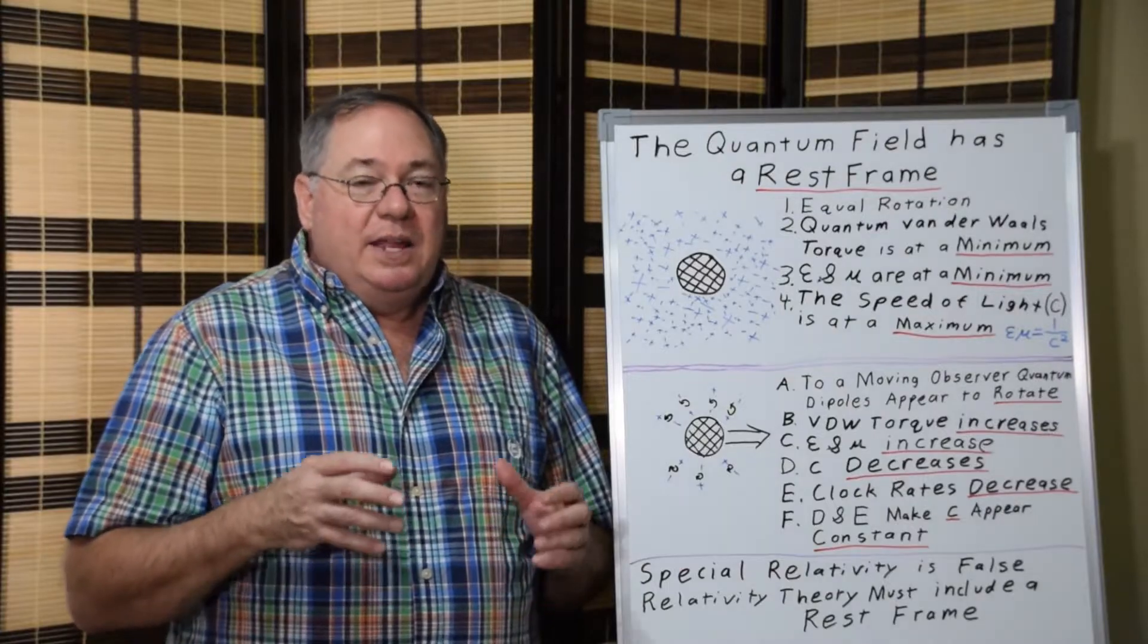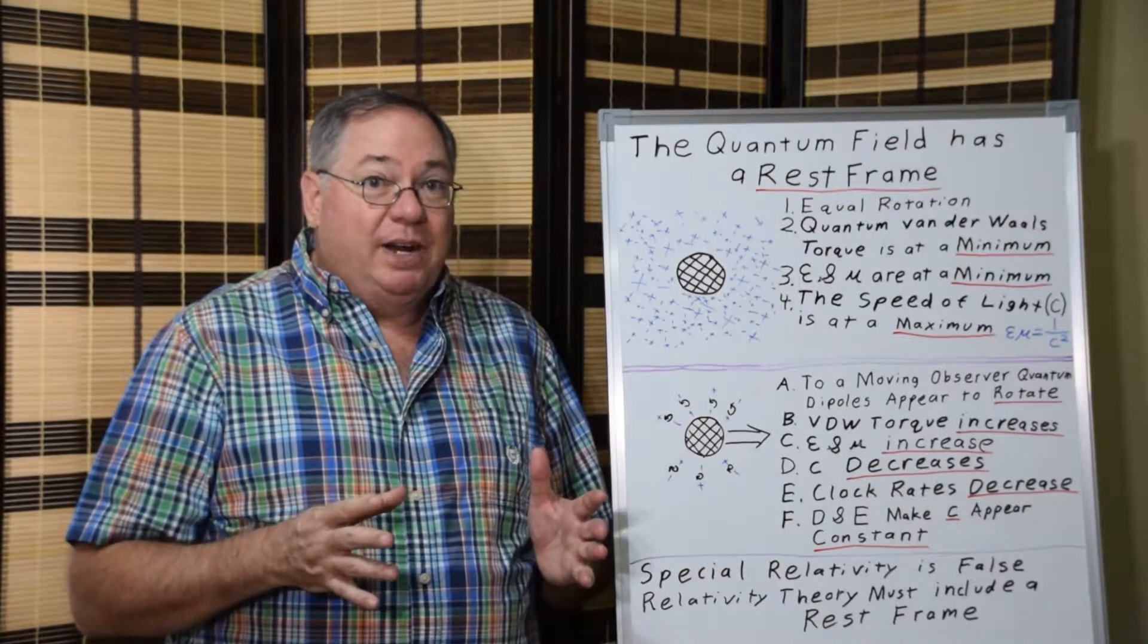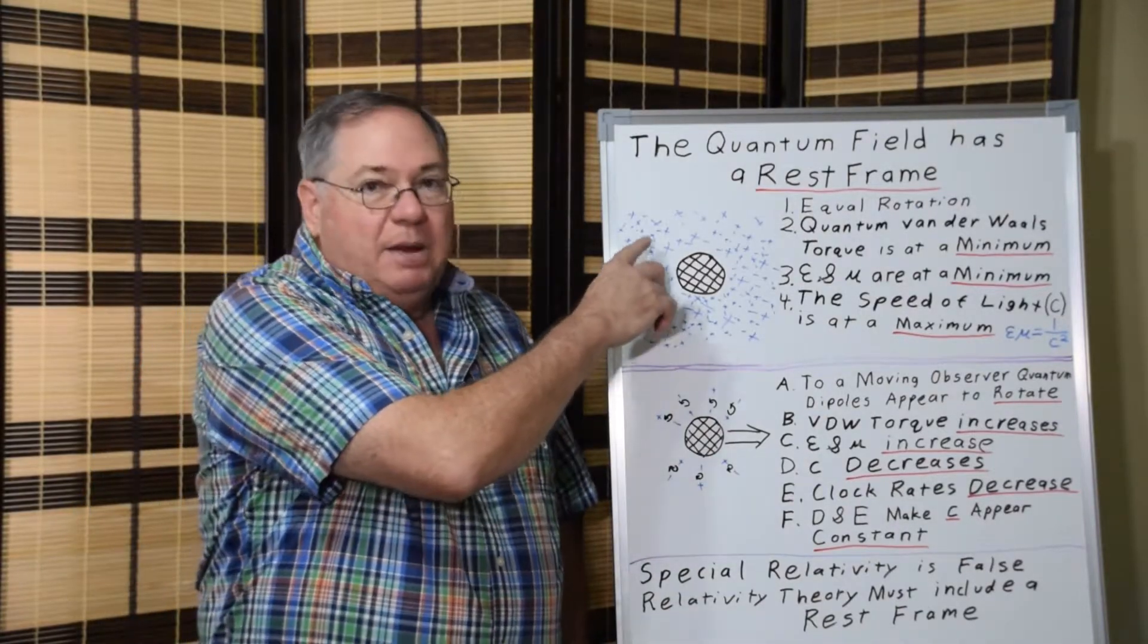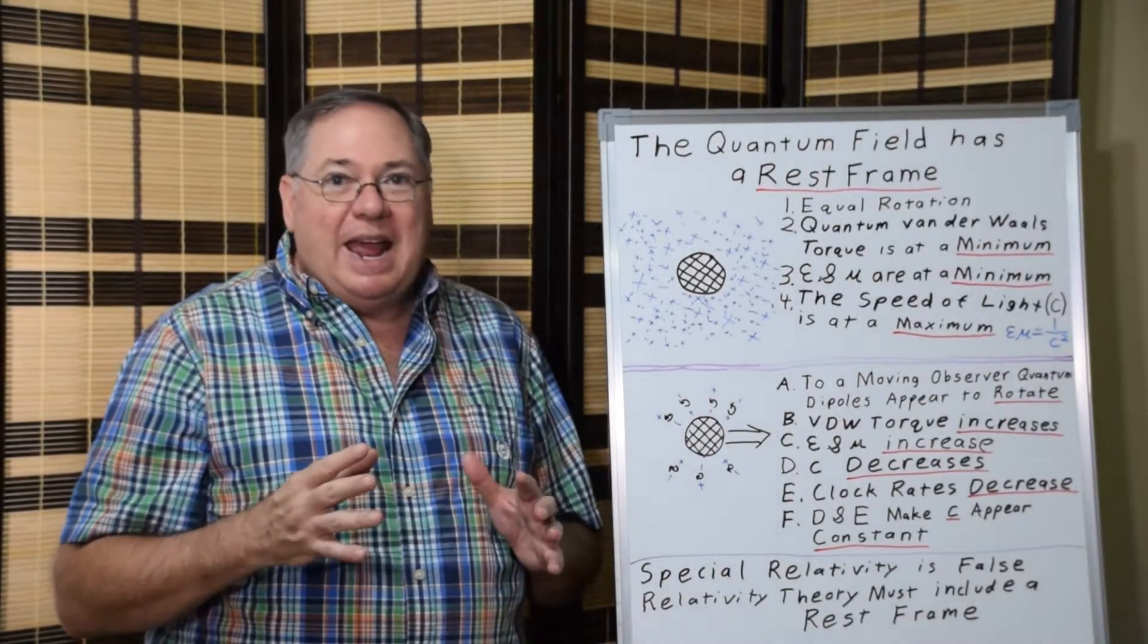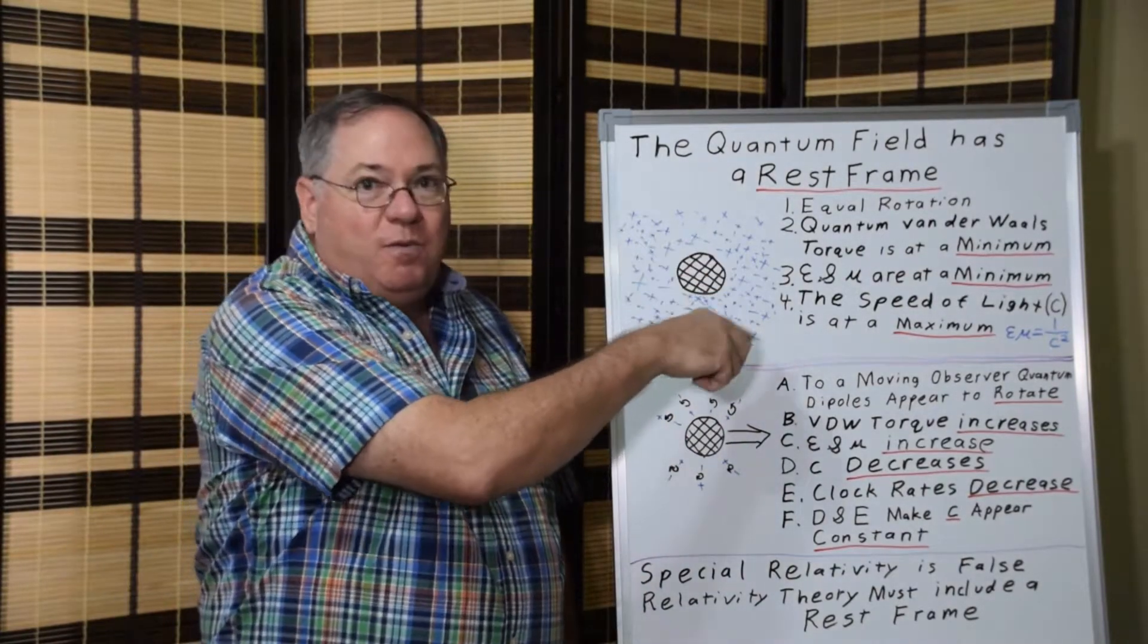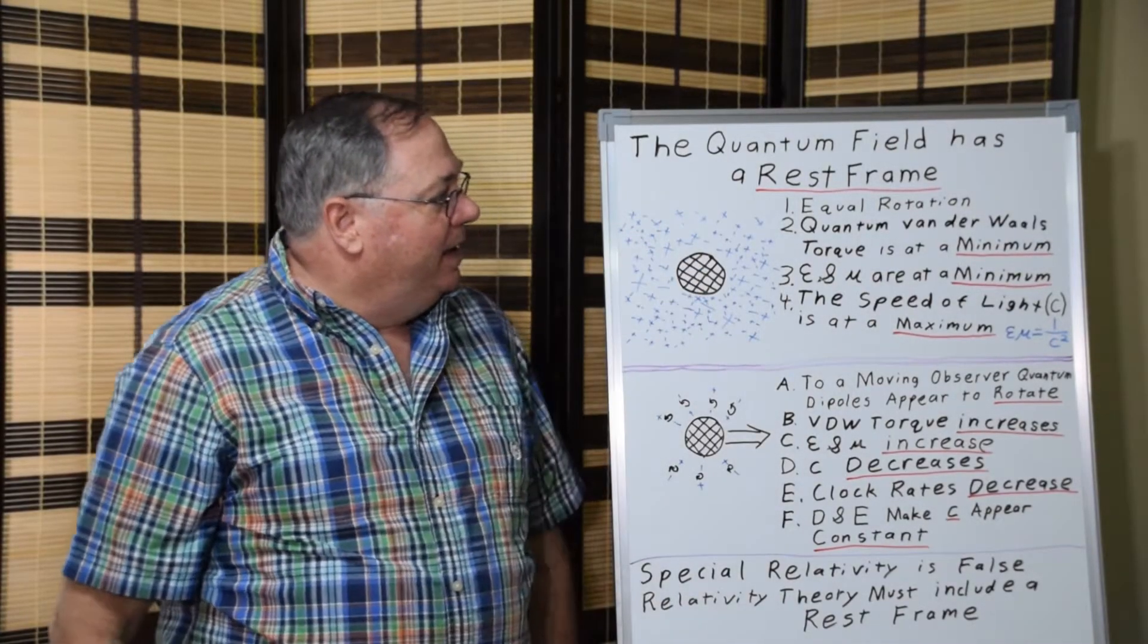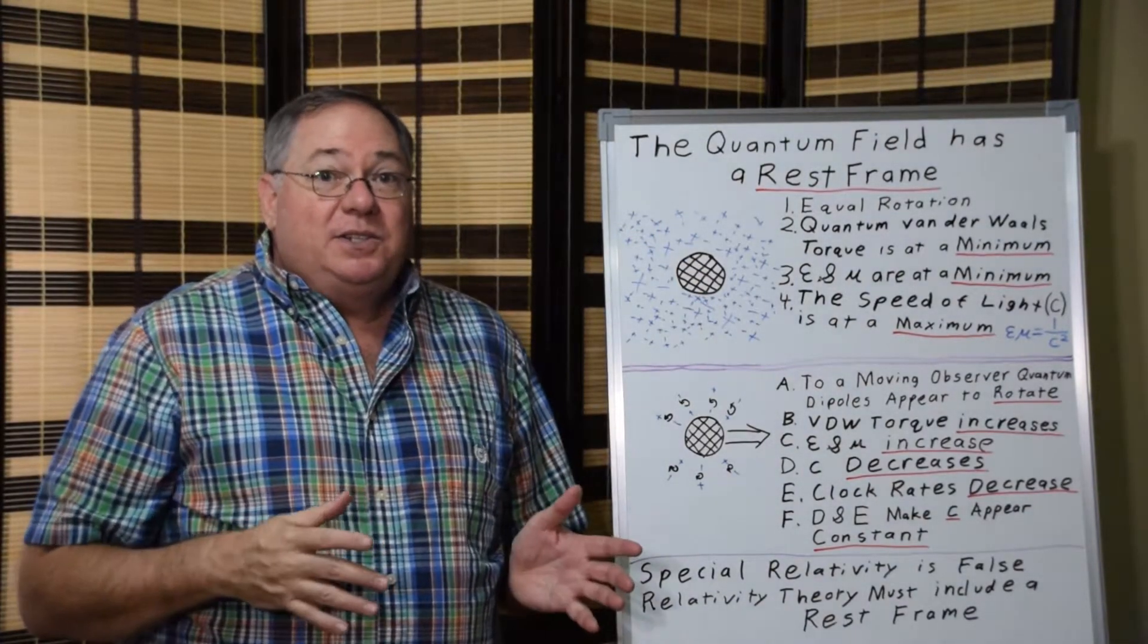So there's going to be a frame of reference, which is a rest frame, where the amount of rotation is equal and average in all directions. You'll see a uniform space around an object, like shown in black here. And that is going to be the rest frame.